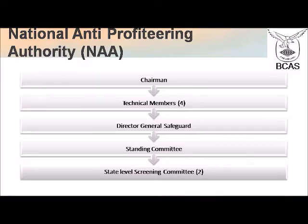The authority is constituted by a chairman and four technical members. Below the authority, you have the Director General of Safeguards. Below him, you have the Standing Committee and thereafter the State Level Screening Committee, who are supposed to be part and parcel of the entire procedural mechanism.